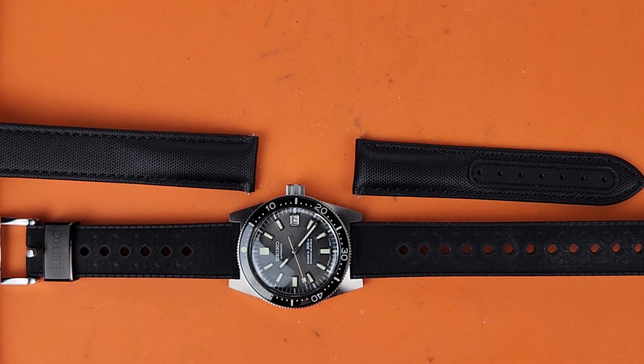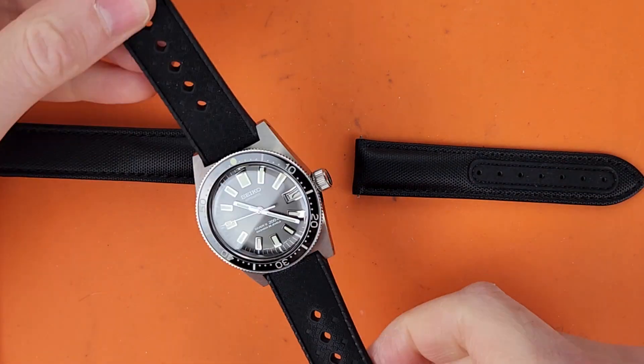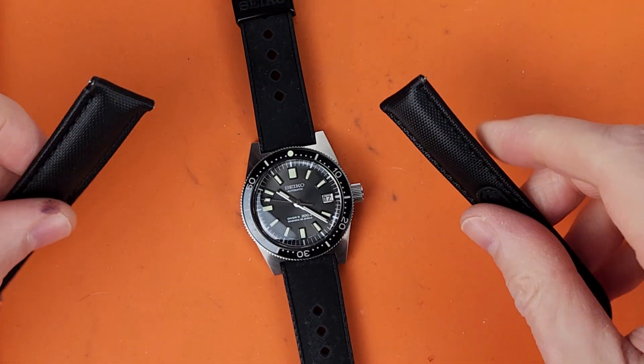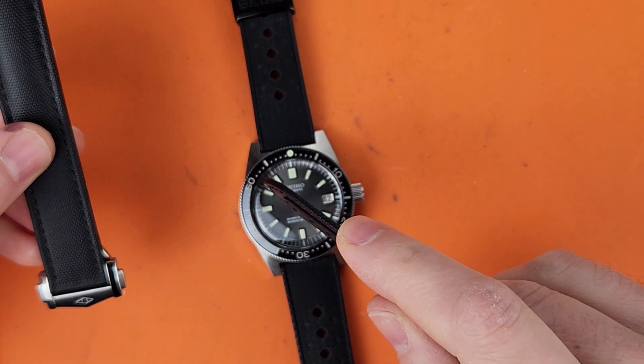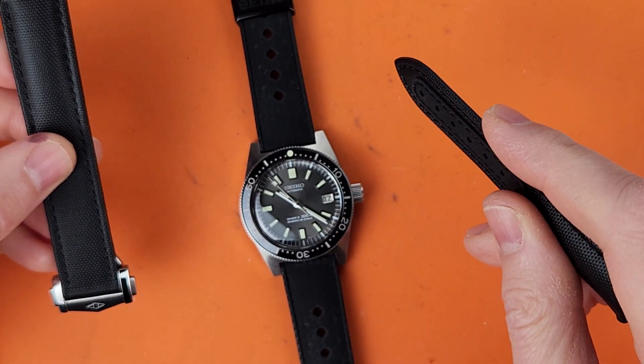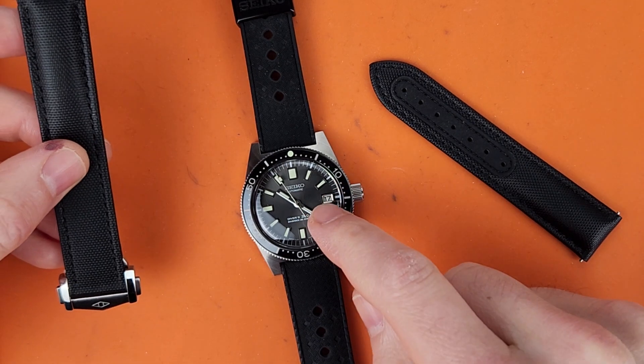Welcome to Longtime Watch. My name is Kevin and in this video I'm going to install the Artem Strap Sailcloth Strap on my Seiko 62MOS Recreation the SJE093.